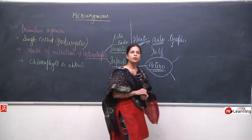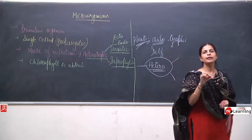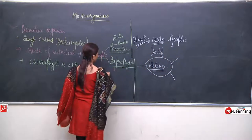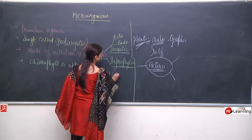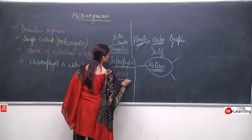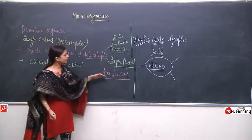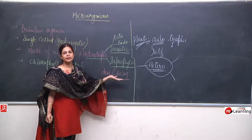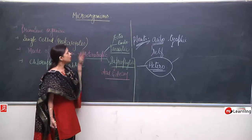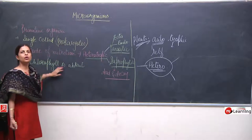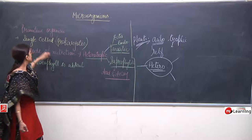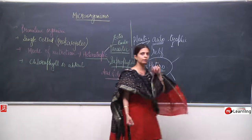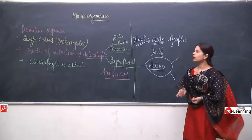Saprophytes are the ones which get their food from dead and decaying organisms or dead and decaying substances — dead organisms and dead and decaying parts. So here we are talking about the mode of nutrition of bacteria. Bacterias are one of the most primitive organisms.